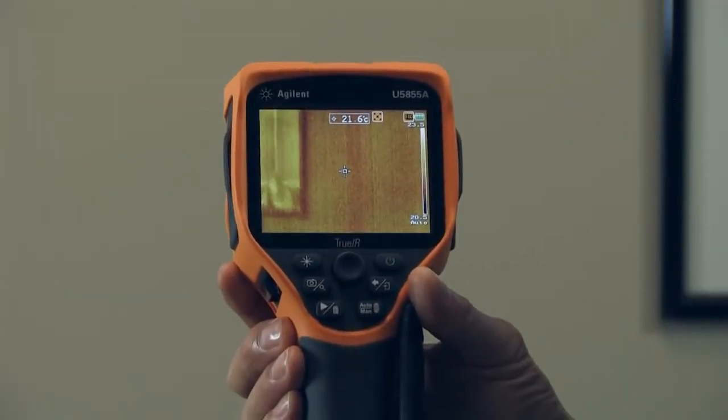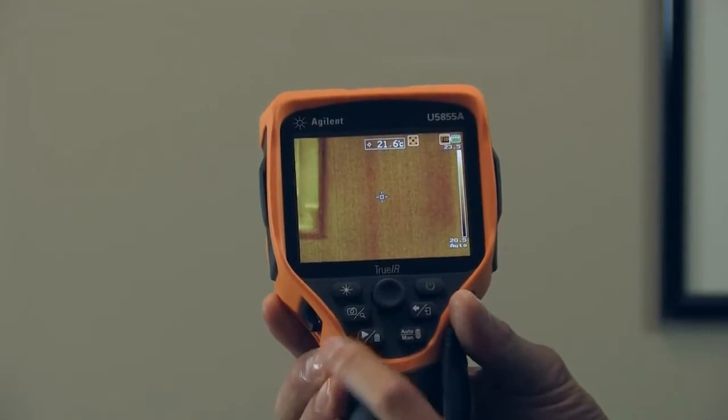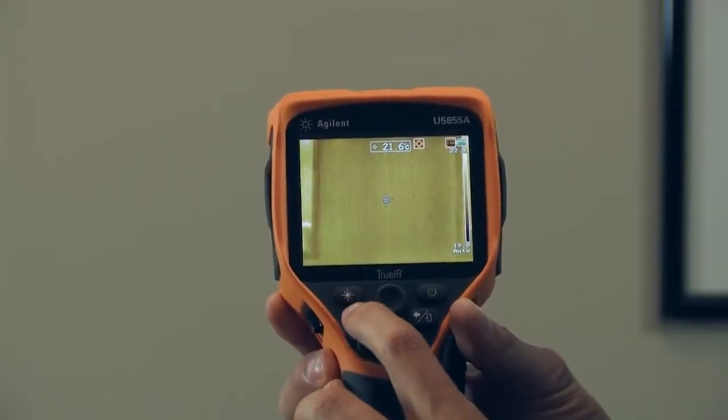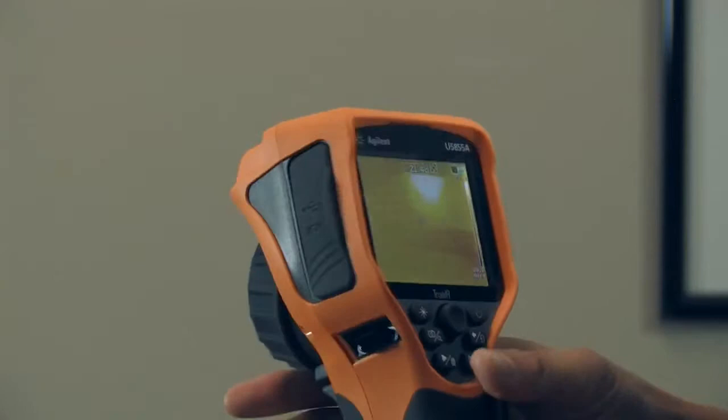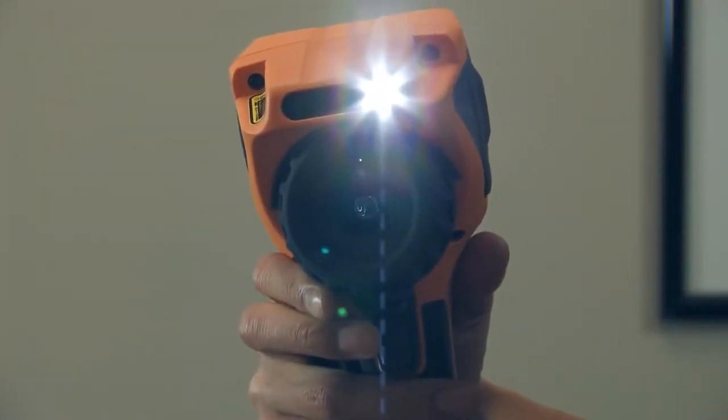And if you actually turn out to be in a darker location you might want a flashlight or a torchlight. So you can actually turn that on by pressing this little star button here. And you can see on the front there you can see the torchlight is on.